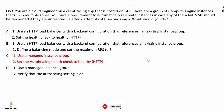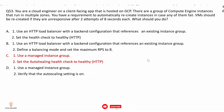Option C: use a managed instance group and set the auto-healing health check to healthy. Using a managed instance group provides auto-healing — whenever any instance becomes unhealthy, it will automatically recreate a new instance. This is the automatic way to manage your instances, so option C is the best solution.